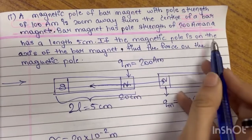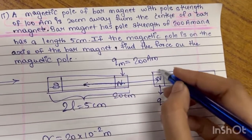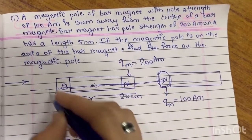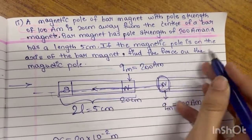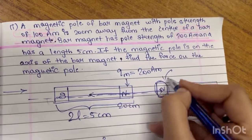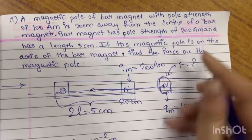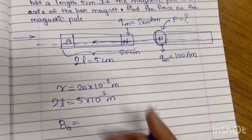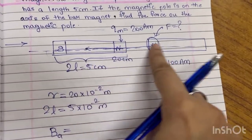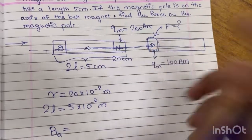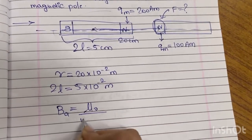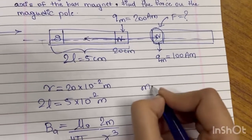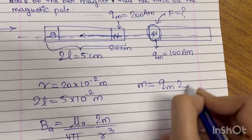If the magnetic pole is on the axis of the bar magnet — you can see it is on the axis of this bar magnet — find the force on the magnetic pole. So first we will calculate the axial magnetic field, because this pole is on the axis of this magnet. The formula is μ₀/4π × 2M/r³. We don't have M, so we calculate it as pole strength × 2L.